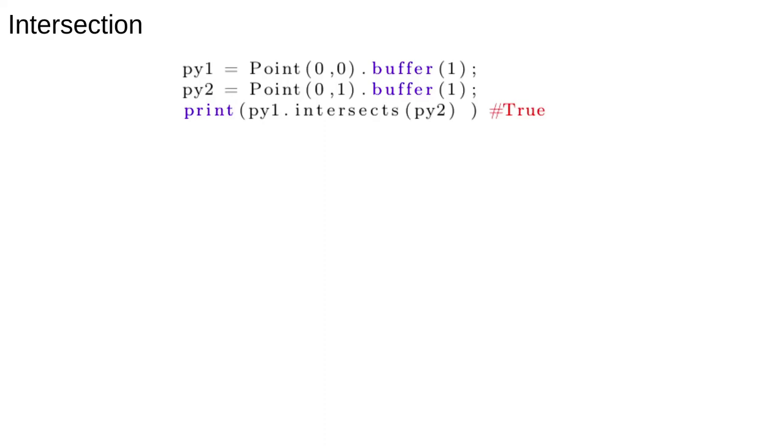Shapely has some useful methods for detecting and working with intersections. The first is the intersects method, which works in a similar way to contains, returning true or false depending on whether the polygons intersect or not. Executing this code would return true. Note that unlike containment, intersection is symmetric, so if polygon A intersects B, then B also intersects A.